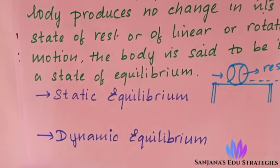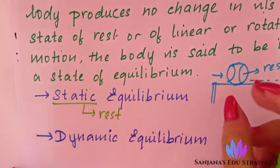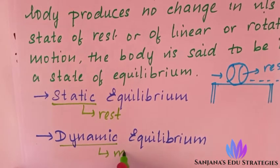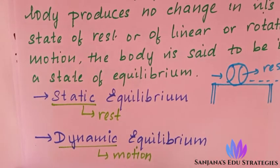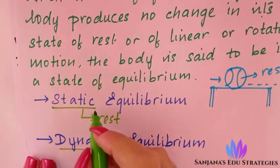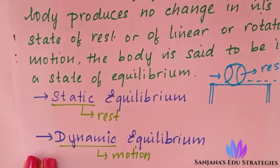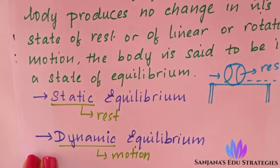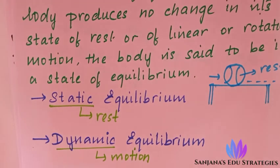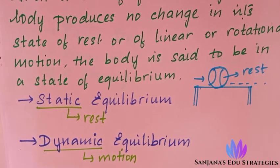Static equilibrium means when no forces are applied, the body is at rest and will remain at rest. Dynamic equilibrium means the body remains in motion with no external forces applied — it will continue in motion by itself. For static equilibrium: when a body remains in a state of rest under the influence of several forces, the body is in static equilibrium. For dynamic equilibrium: when a body remains in a state of motion — translational or rotational — under the influence of several forces, the body is said to be in dynamic equilibrium.